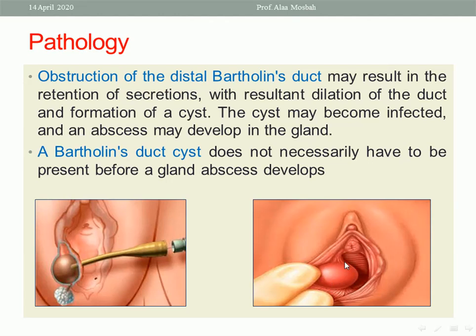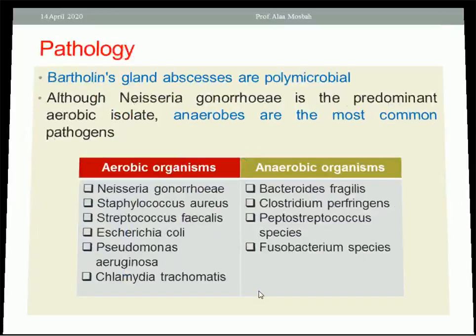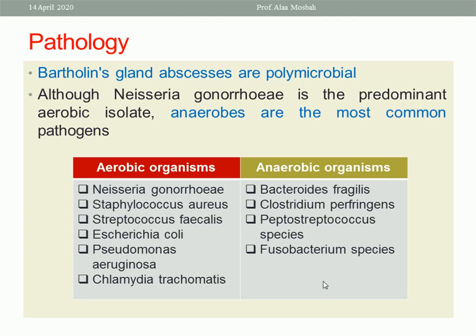The Bartholin duct cyst doesn't necessarily have to be present before a gland abscess develops. Bartholin gland abscesses are polymicrobial, and anaerobes are the most common pathogens. However, Neisseria gonorrhea is a predominant aerobic organism. Aerobic organisms include Neisseria gonorrhea, Staph aureus, Streptococcus, E. coli, Pseudomonas aeruginosa, and Chlamydia trachomatis. Anaerobic organisms include Bacteroides fragilis, Clostridium, Peptostreptococcus species, and Fusobacterium species.